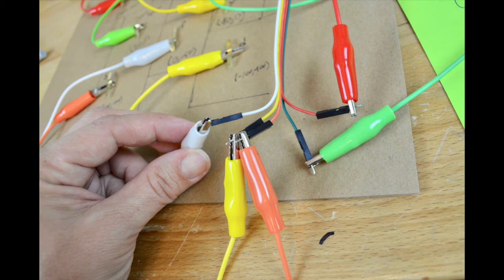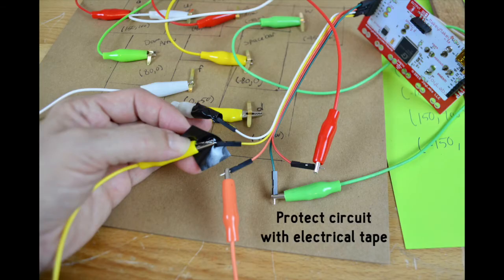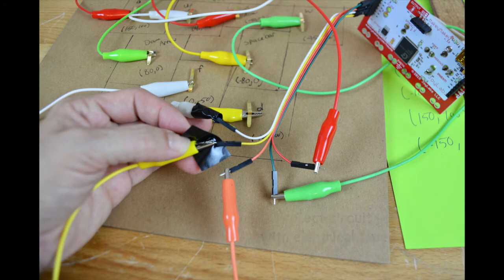Since my jumper wires are all connected because of this ribbon cable, I'm going to use electrical tape to cover the metal tips of my alligator clips, so I don't get any cross connections.